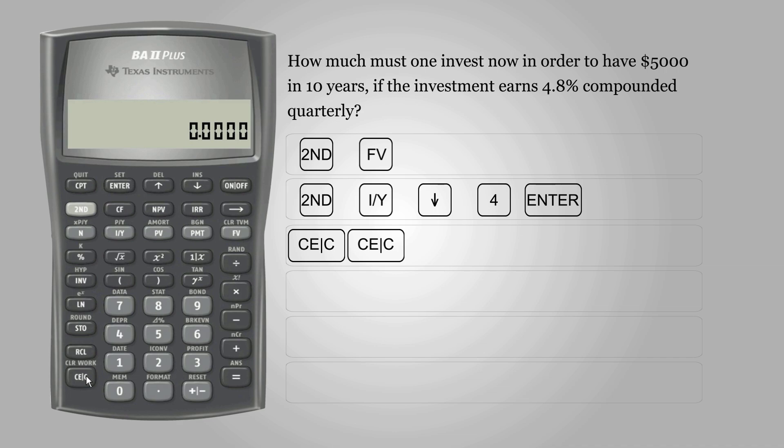Number of years is 10, so enter 10 and press N for number of periods. The calculator automatically multiplies the number of years to the CY value entered in the previous step.